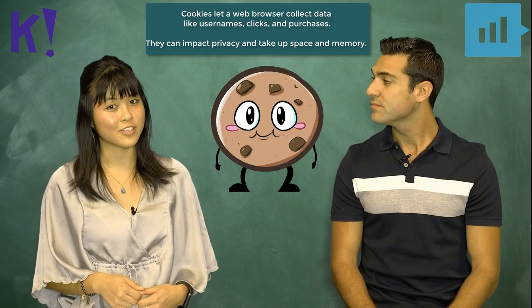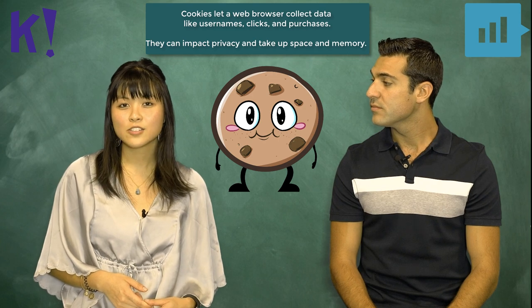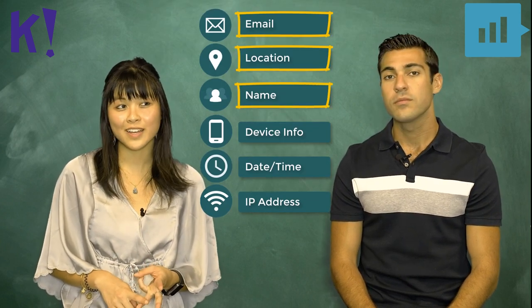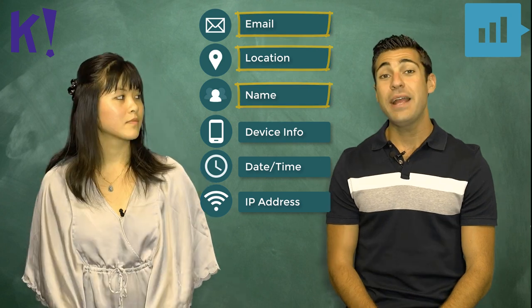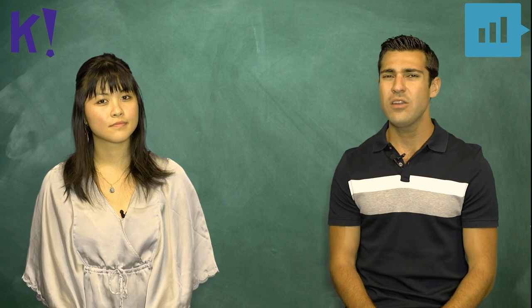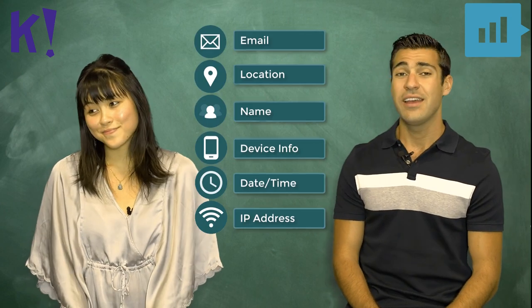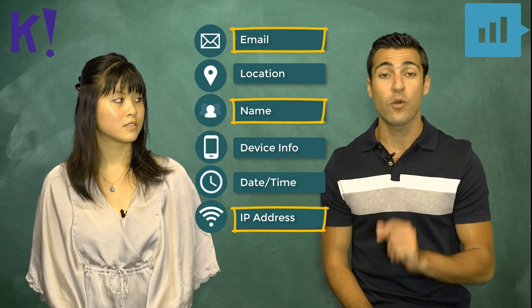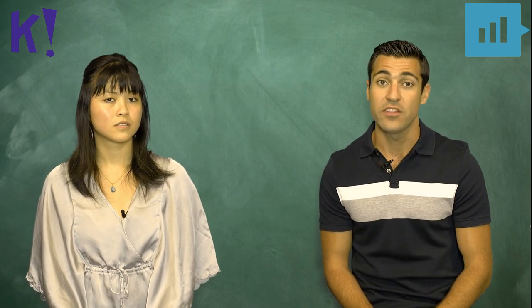Kahoot does use cookies and it tracks the students' data. So when the teacher signs up, it keeps their name, their email, password, and much more than that. Mentimeter also collects information from the account holder, but not as much as you mentioned. They do keep the IP address, but only for 14 days, less than the standard 30.